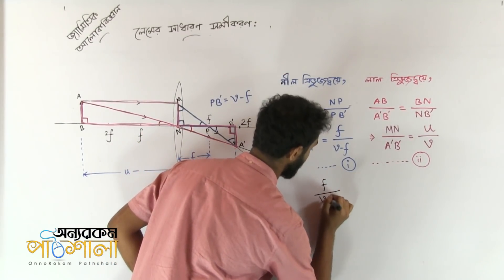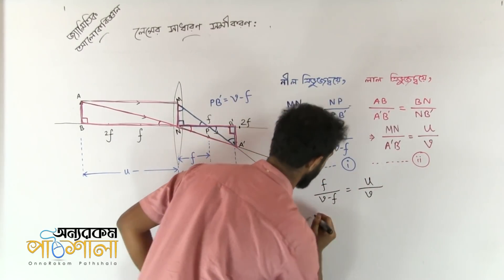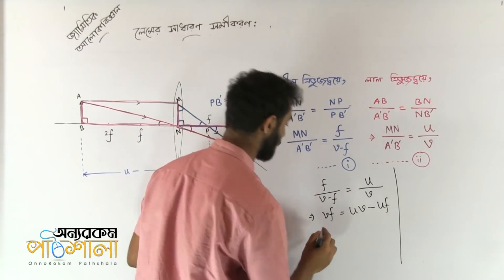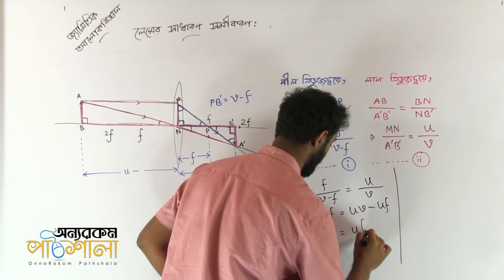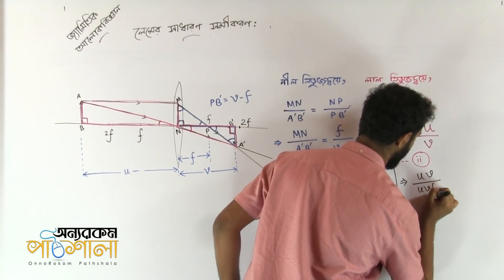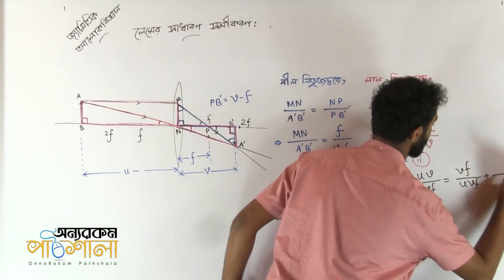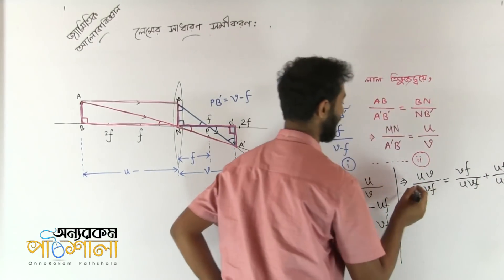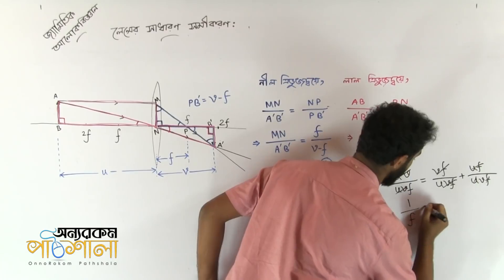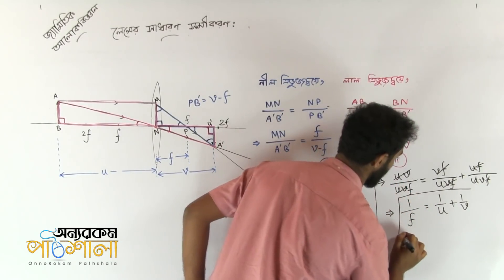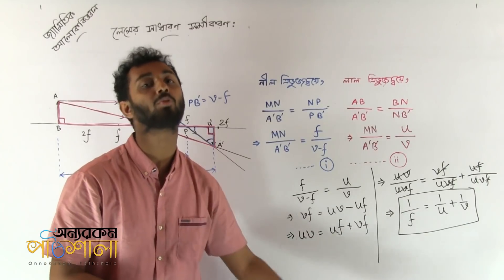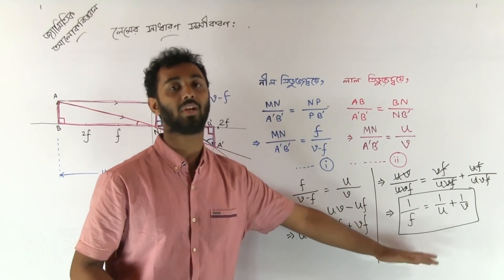So, we can write: F is equal to V minus F, which is equal to U divided by V. Therefore, V·F is equal to U·V minus U·F. Now, let's look at the calculation: U·V is equal to U·F plus V·F. So we can write, dividing through by U·V·F: 1/F equals V·F divided by U·V·F plus U·F divided by U·V·F. Ultimately, we can write 1/F is equal to 1/U plus 1/V.